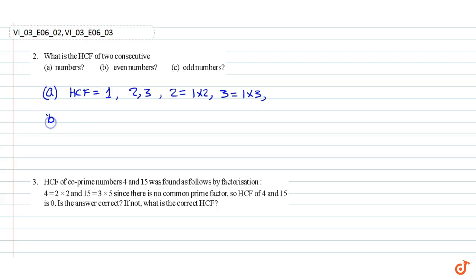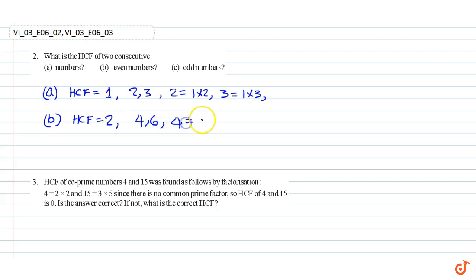Part B: even numbers. HCF is equal to two, because in the case of four and six, four can be written as two into two, six can be written as two into three, therefore HCF is equal to two.